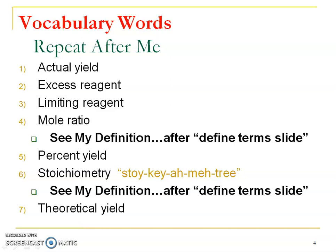Vocab words — as usual, repeat after me. Notice number four and six — I actually give you my definition instead of the book's definition; I tweaked it a little bit and I like mine better. So number one: actual yield; excess reagent; limiting reagent; mole ratio; percent yield; stoichiometry; and theoretical yield.